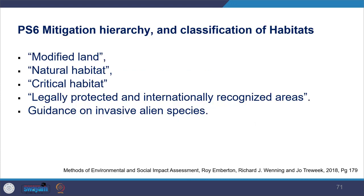IFC Performance Standard 1 covers assessment and management of environmental and social risk and impact, while Performance Standard 6 deals with biodiversity and sustainable management of living natural resources. PS6 particularly targets protecting biodiversity and maintaining the benefits of ecosystem services. It also introduces habitat classifications including modified land, natural habitat, critical habitat, and legally protected and internationally recognized areas — all of which must be considered when performing EIA.